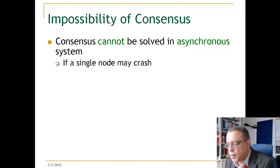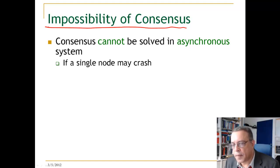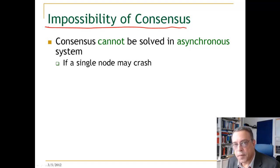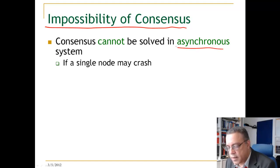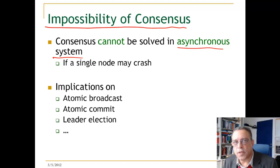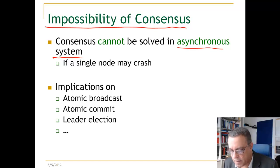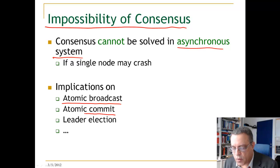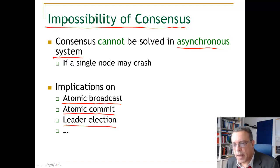This raises the issue of whether we can implement consensus on a system that is geographically distributed over the internet. This turns out to be impossible. Consensus cannot be solved in an asynchronous system, even if only a single node might crash. This has implications for a number of services we would like to provide over the network — for example, atomic broadcast, atomic commit used in databases, or a leader election service where one node coordinates the actions of others.